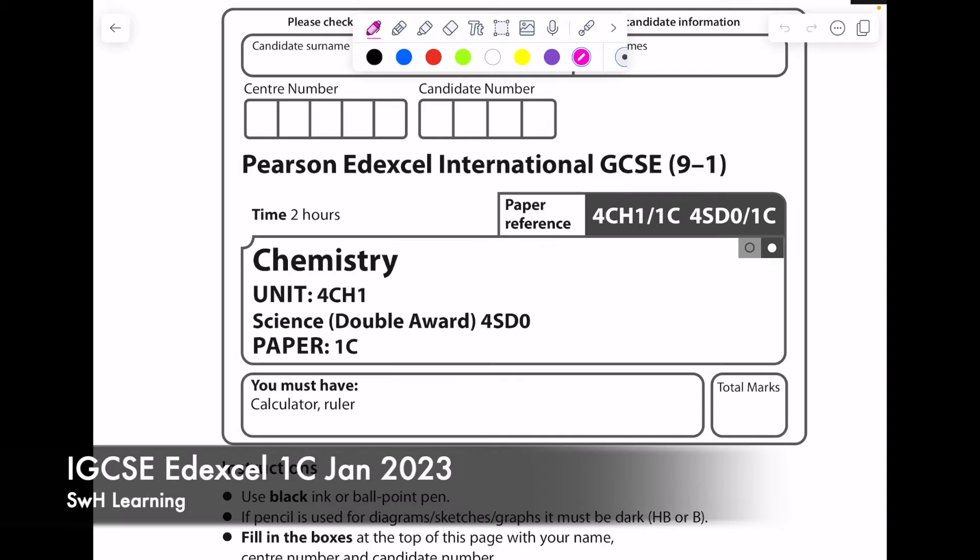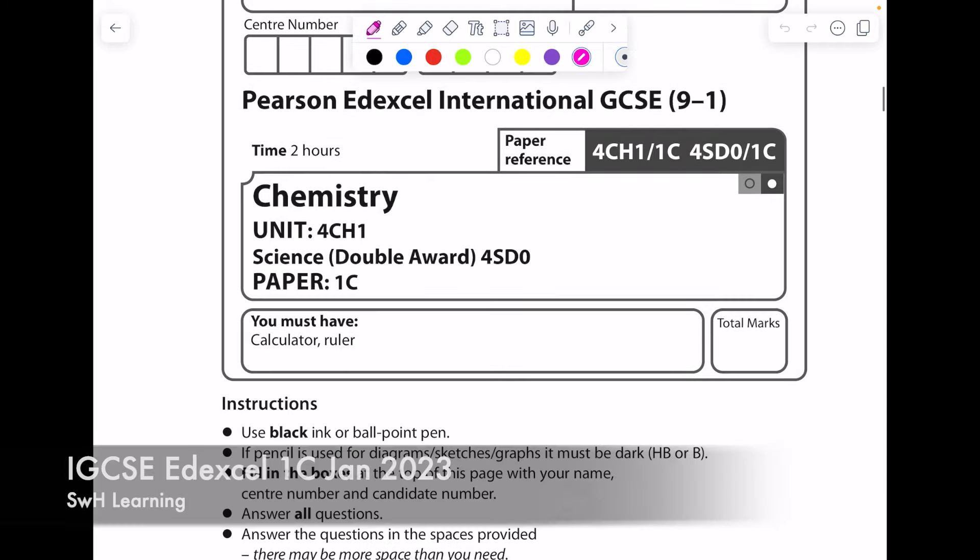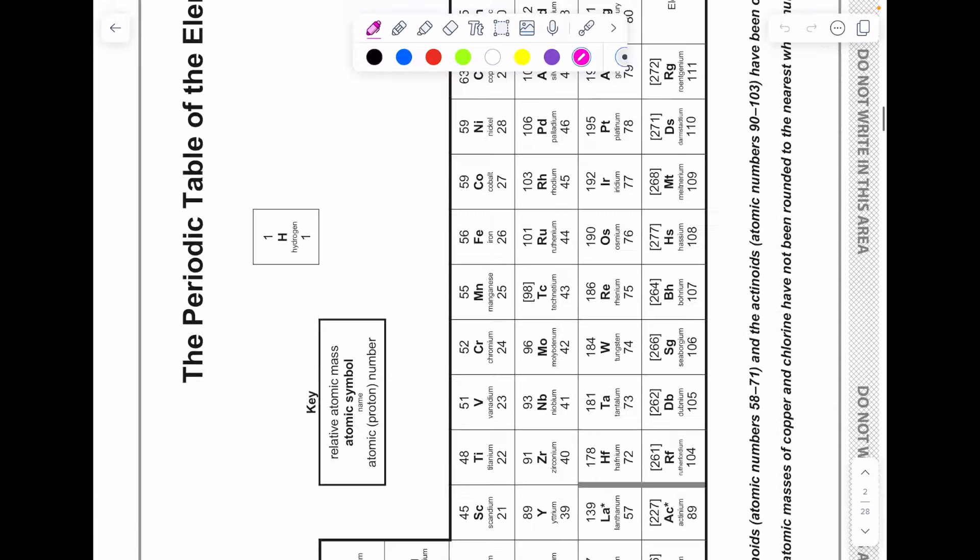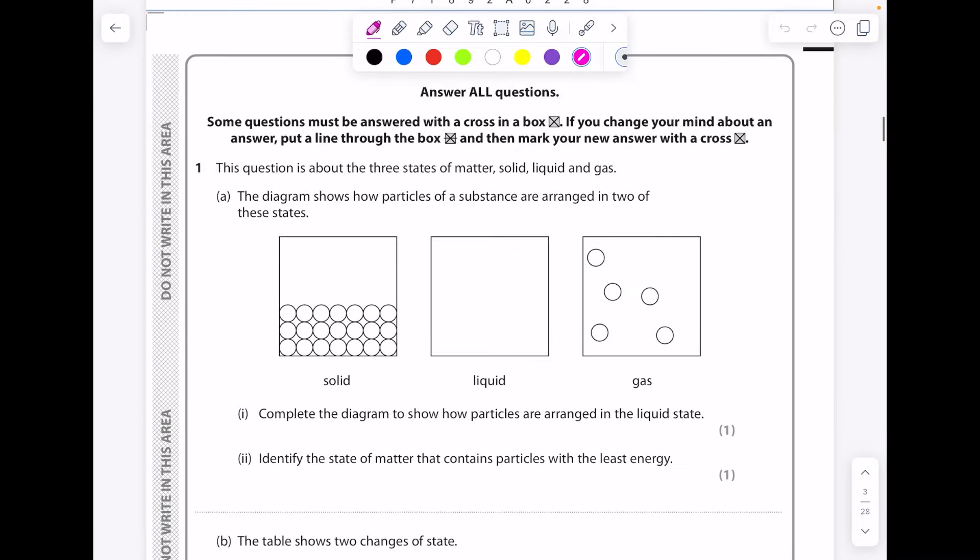This is an IGCSE Edexcel 1C paper talk-through from January 2023. This question is about the three states of matter: solid, liquid, and gas.